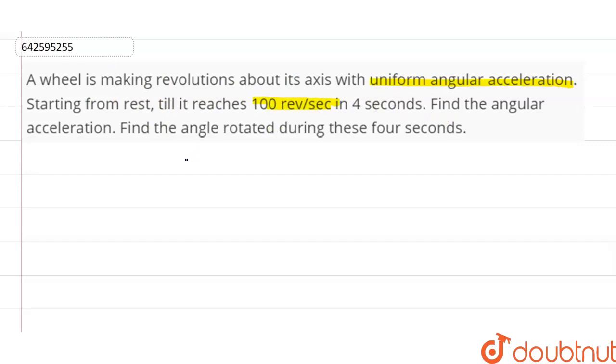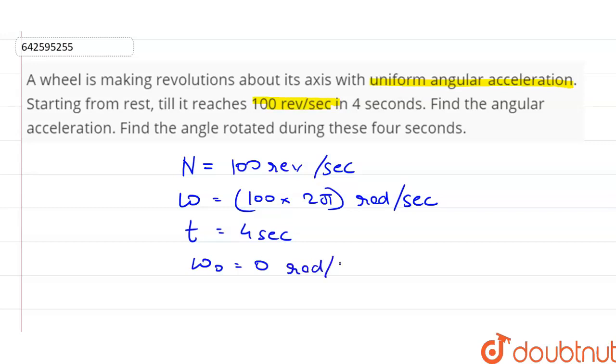So we are given the revolutions per second capital N as 100 revolutions per second. In radians per second the final angular velocity will be equal to 100 into 2π radians per second and the time taken t to reach this angular velocity is 4 seconds. Initially the wheel is at rest so ω₀ is 0 radian per second.